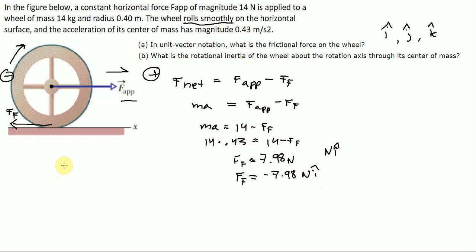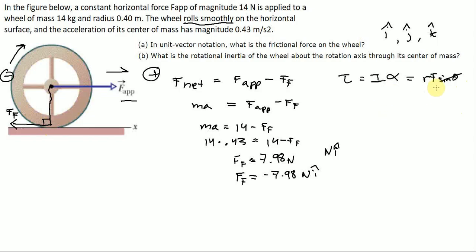Now part B: what is the rotational inertia of the wheel about the rotation axis through its center of mass? Now is where we use the torque equation. We know torque equals I·alpha, where I is rotational inertia and alpha is angular acceleration. We also know torque equals r times F times sine theta, but since this force is perpendicular to the axis of rotation, sine theta equals one. So I·alpha equals r·F, where F is f_f.